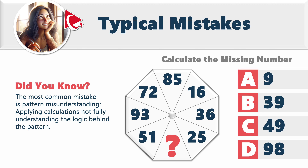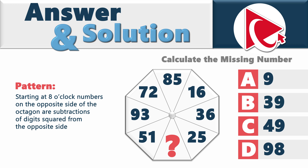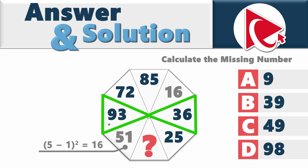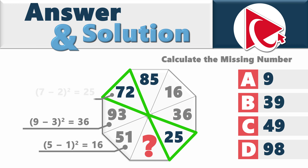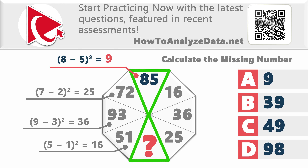The most common mistake in this type of question is pattern misunderstanding — applying calculations without fully understanding the logic behind the pattern. The pattern here is very simple: starting at eight o'clock, numbers on opposite sides of the octagon are calculated by subtracting the digits and squaring the result. At eight o'clock we see 51; at two o'clock we see 16 — because (5−1)² = 16. Confirming: (9−3)² = 36, (7−2)² = 25. So the missing number is (8−5)² = 9. The correct answer is choice A — 9.